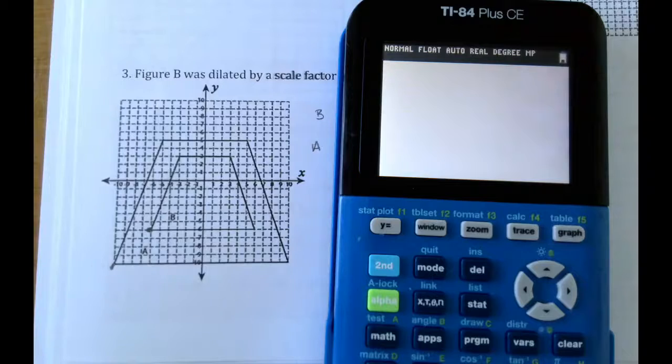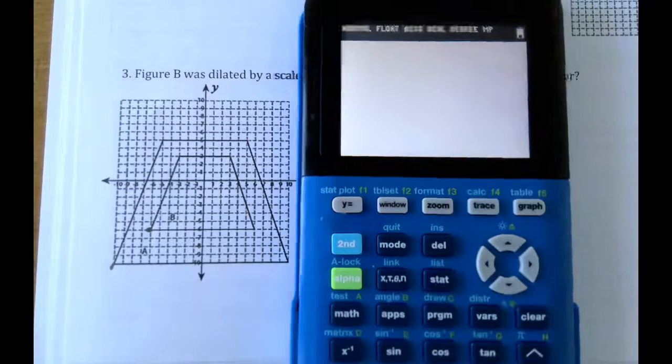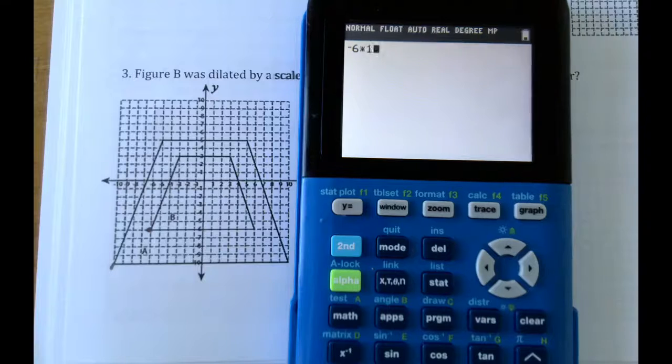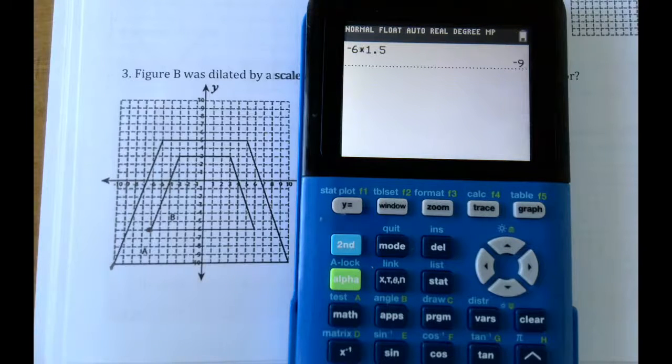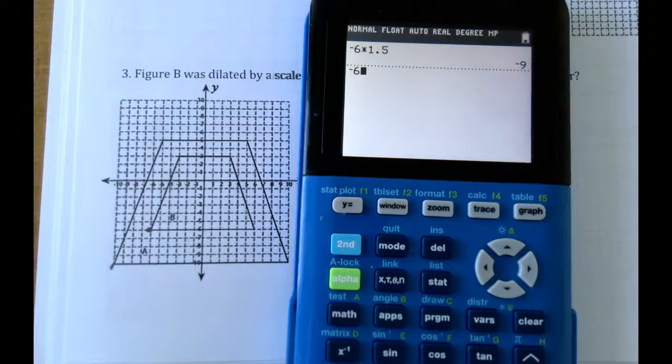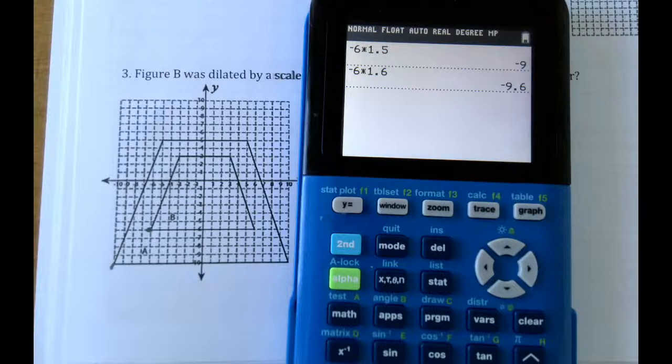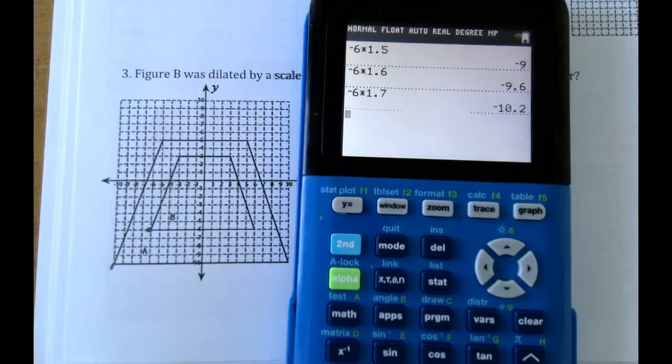So we're trying to figure out what gets us from negative 6 to negative 10. So if we do negative 6 times 1.5, we just determined that's negative 9, so that's a little bit too short. So negative 6 times 1.6. Oh, that's closer to negative 10. 1.7 is going to be over. So we know 1.666 repeating.